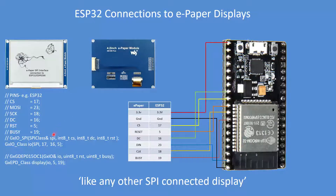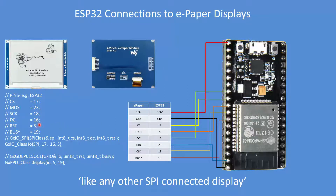In terms of the class object for the library, note that there's a chip select, a data command, and a reset. Pin 17 is chip select — there it is, pin 17. Pin 16 is data command, and similarly pin 16 is defined as data command. Pin 5 is the reset, and similarly there's reset defined. I've commented those out, but in your program you'll need to remove the comments.